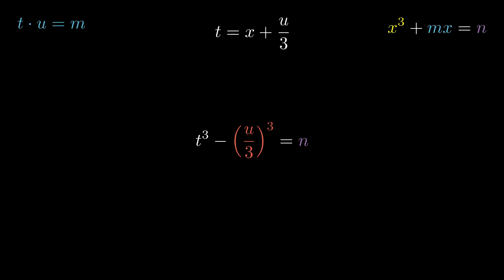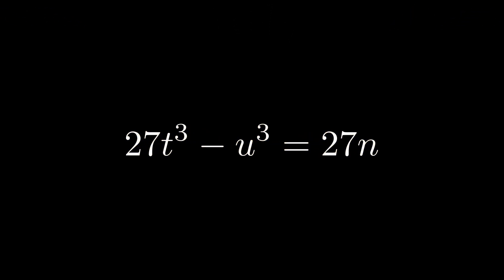We start by writing out the (u/3)³ term and multiply by 27 on both sides to eliminate the denominator. Since we have two unknowns and two equations for t and u, we can for example rewrite this expression in terms of t. Since t times u is equal to the constant m, u is equal to m/t. We can therefore make a substitution for u.